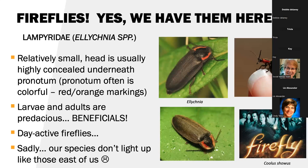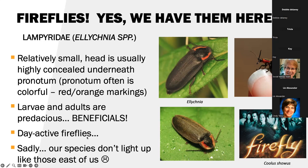The next group of beetles: fireflies. I get this question every year — yes, we have fireflies here. The genus we have is Ellychnia. And this genus does not produce those lights they have on the East Coast and the Midwest. These are relatively small beetles. The head is usually highly concealed beneath the pronotum, which is often colorful — red, orange, sometimes yellow markings around that margin. This is a very beneficial group; the larvae and adults are predacious, but you will find them feeding on nectar as a supplement. They are day-active fireflies — and sadly, our species don't light up.